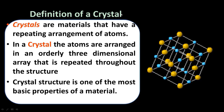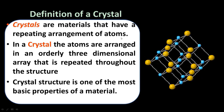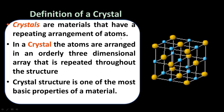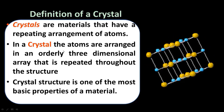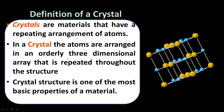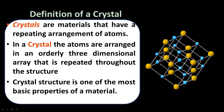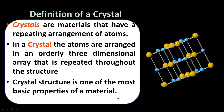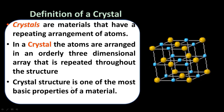Now we focus on crystals. Crystals are materials that have a repeating arrangement of atoms — molecules or ions are arranged in a regular fashion, and that regular arrangement is repeated. In a crystal, the atoms are arranged in an orderly three-dimensional array that is repeated throughout the structure. Crystal structure is one of the most basic and important properties of a material.